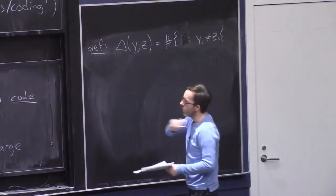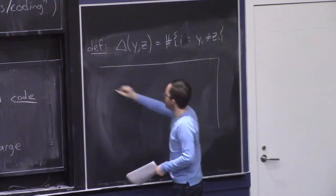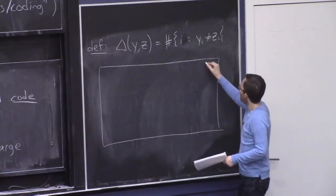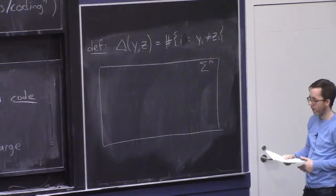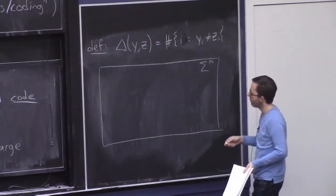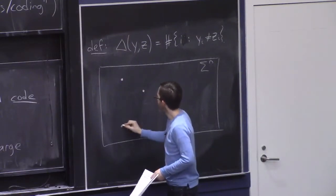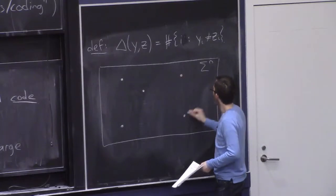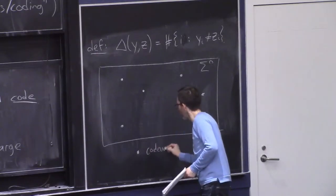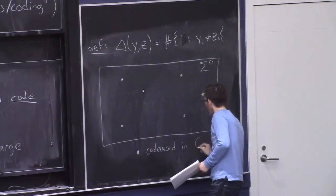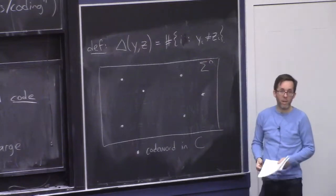And now I'd like to try to draw a picture of all these things we've talked about so far here. So let's imagine that this box here represents sigma to the N, all possible strings over this alphabet sigma of length N. So this is all possible things that a receiver could potentially receive. And I'm going to put these little dots here. And these symbolize the code C. So these dots, each dot here is a code word in C. So we'll have Q to the K different dots in this whole space of Q to the N possible strings.